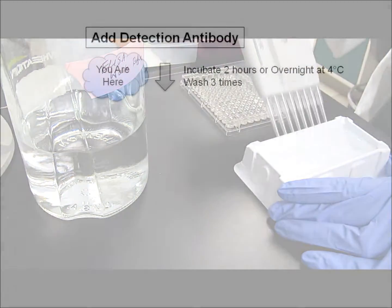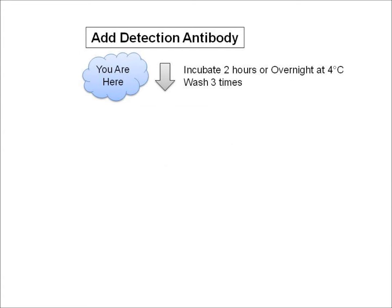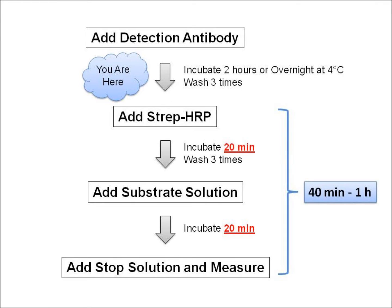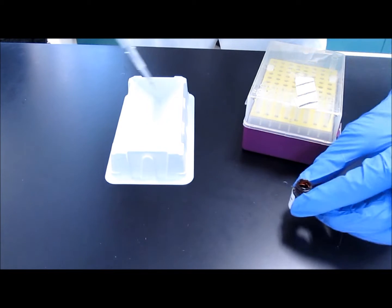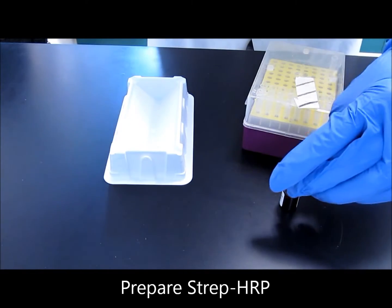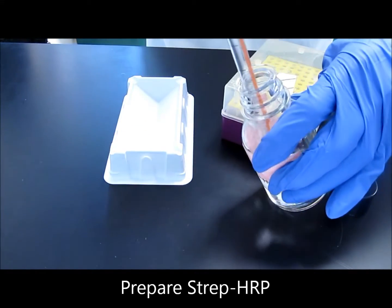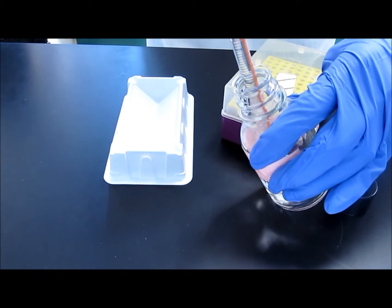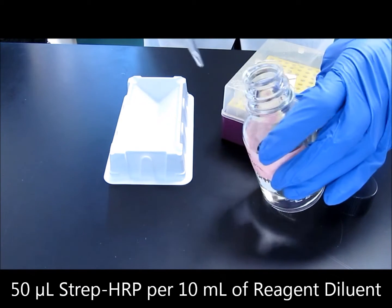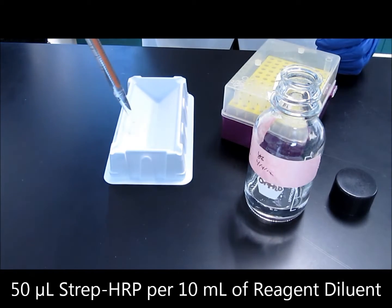Another thing to keep in mind is that from this point forward, the long incubation times are over and the assay is almost done, so be sure that your plate reader will be available for you in about 40 minutes to 1 hour. After the detection antibodies have been incubated, prepare the strep HRP by diluting it in reagent dilutant. For this kit, 50 microliters of strep HRP are to be diluted in 10 milliliters of reagent dilutant.